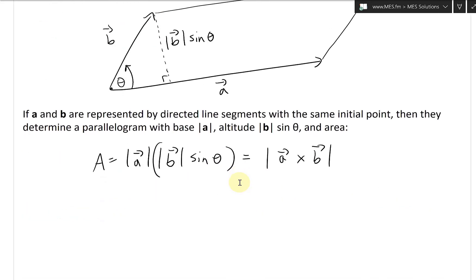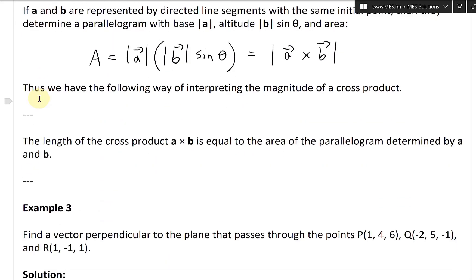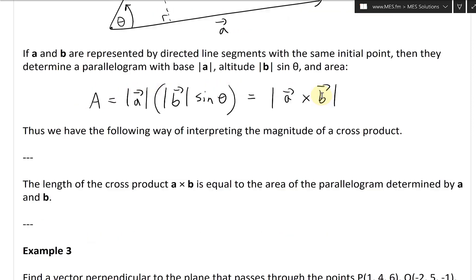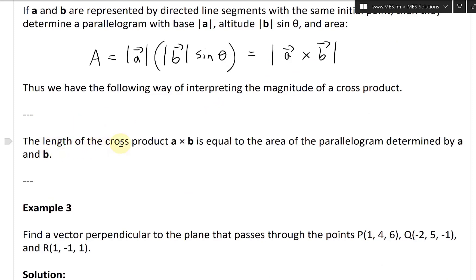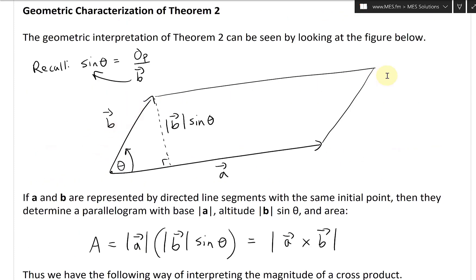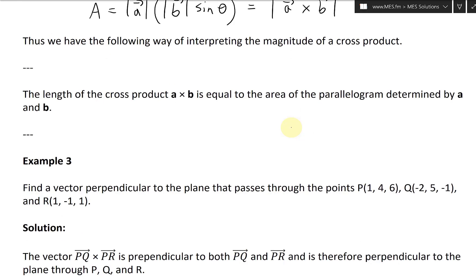All right, let's erase that. Thus we have the following way of interpreting the magnitude of a cross product: the length of the cross product A cross B is equal to the area of the parallelogram determined by A and B. So you have a parallelogram like this — all sides parallel. There's the parallelogram.